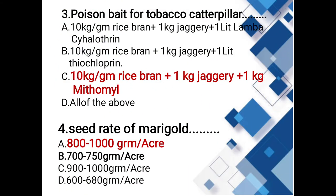Poison bait for Tobacco Caterpillar: options include 10 kg rice bran with 1 kg jaggery and 1 litre lambda-cyhalothrin, or 10 kg rice bran with 1 kg jaggery.